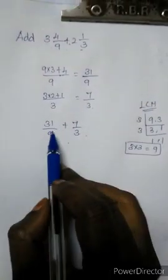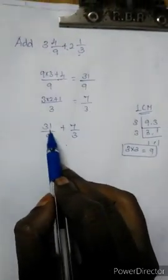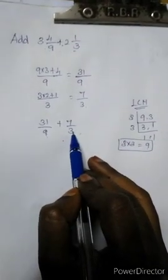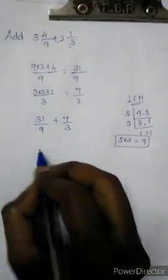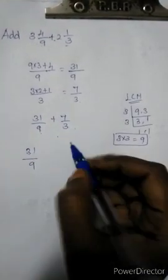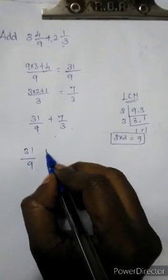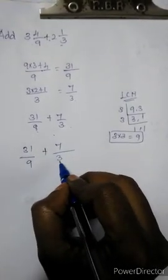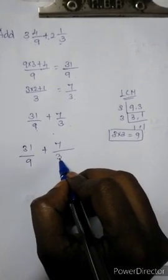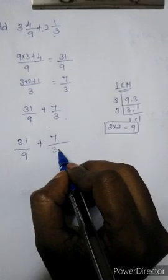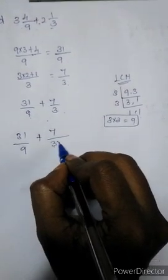So in this sum already we are having 9 in denominator. So we want to change this alone. You keep it as it is 31 by 9. For this how can we change? 7 by 3. First you have to multiply it in denominator. In which number we have to multiply?